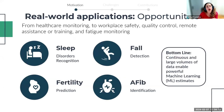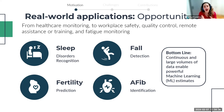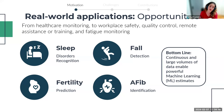This continuous accrual of large volumes of data, combined with the powerful capabilities of machine learning, has given rise to a wide range of applications — from workplace safety and security to quality control and healthcare monitoring. Mobile and wearable devices now provide previously unheard-of machine learning estimates, from recognizing sleep disorders to identifying heart conditions such as atrial fibrillation. It is truly marvelous, as these devices are evolving into miniature medical instruments right out of our pockets.